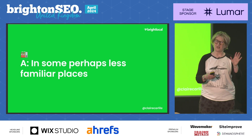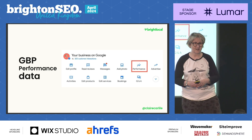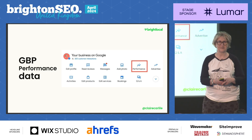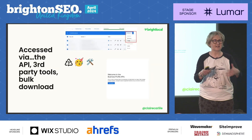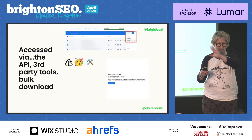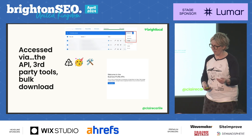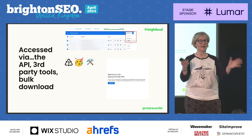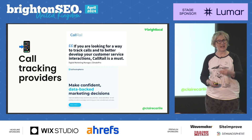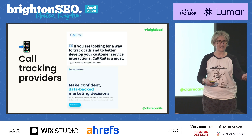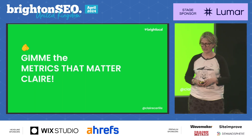We know GA4 and Google Search Console, but we need to look in some other places too. We have what was previously called Insights — now called your performance data — which you can access via the NMX, the place in the SERP where you get your information. You've also got third-party tools, bulk downloads, and the API — lots of different ways to get that data. And if you're using call tracking, you'll need to get that data natively from those providers, though you can also pull it into GA4.